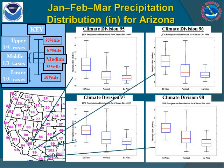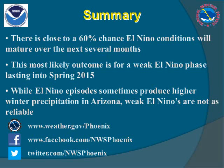While El Niño winters generally provide better chances for above average precipitation, there remains a large spread in potential outcome. In fact, there are some El Niño winter seasons that lead to below average precipitation, and while not shown here, these tend to be the weaker El Niño events.